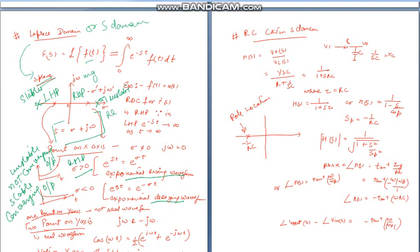Basically, actual real frequency axis is this j-omega axis. In s-plane, this is imaginary axis, but this is actually a real frequency axis.